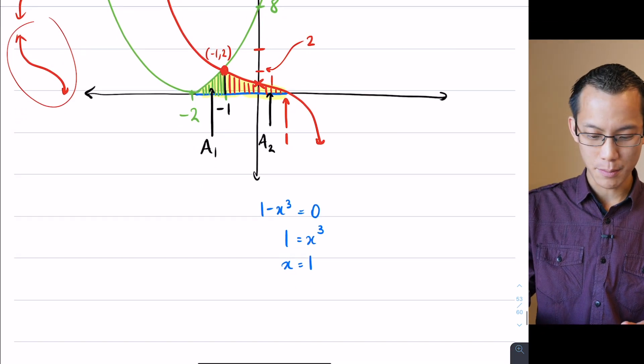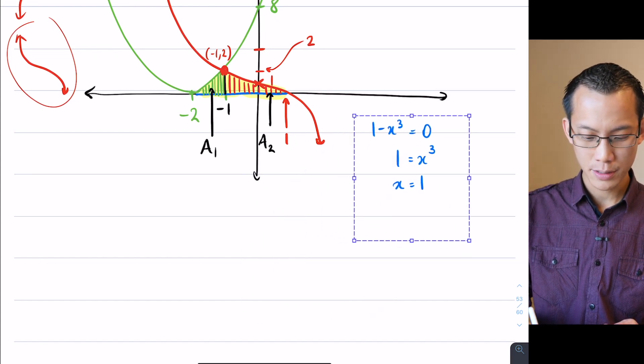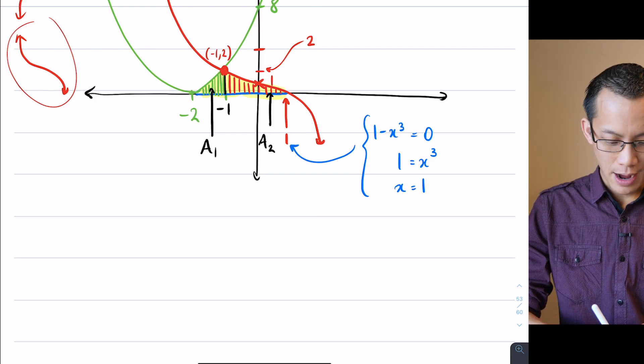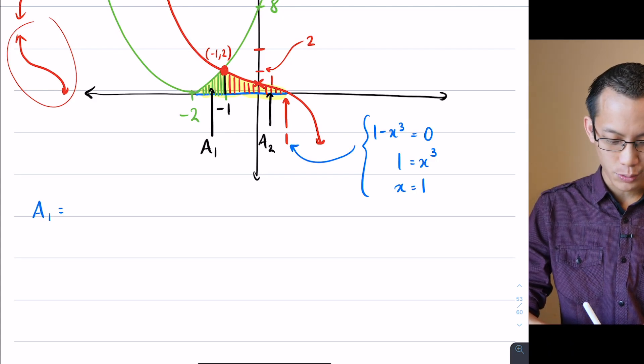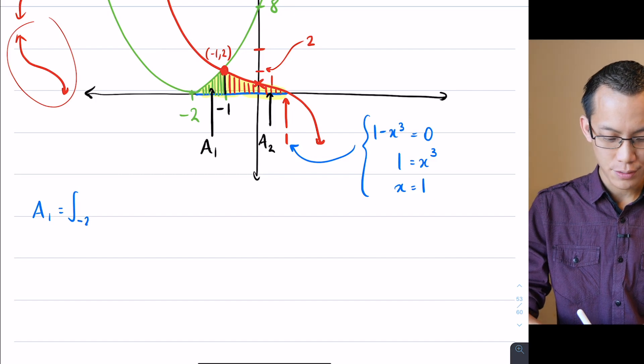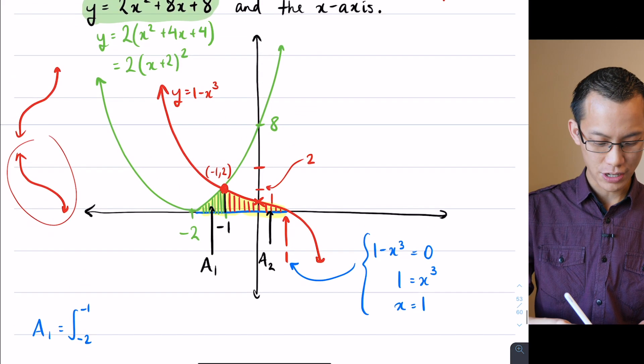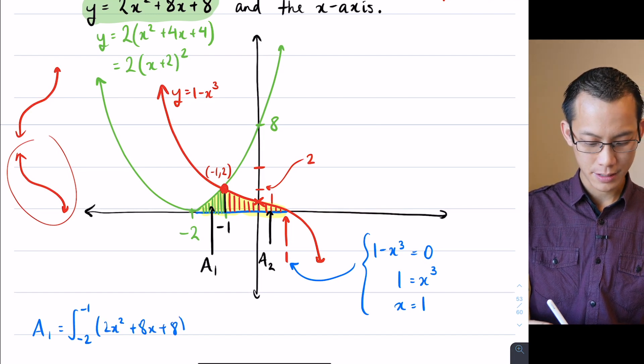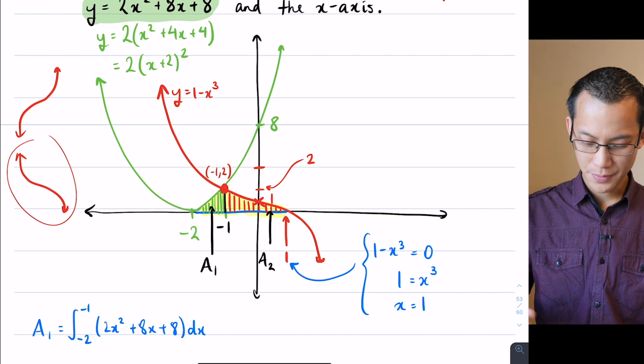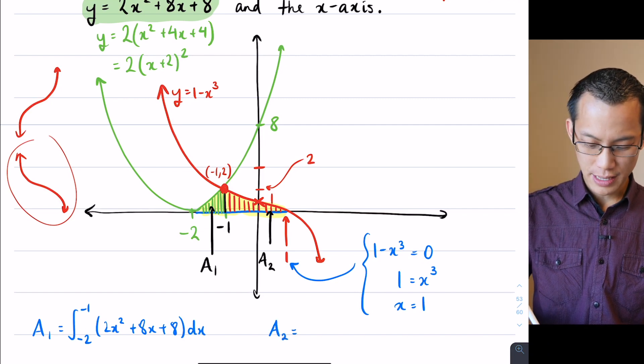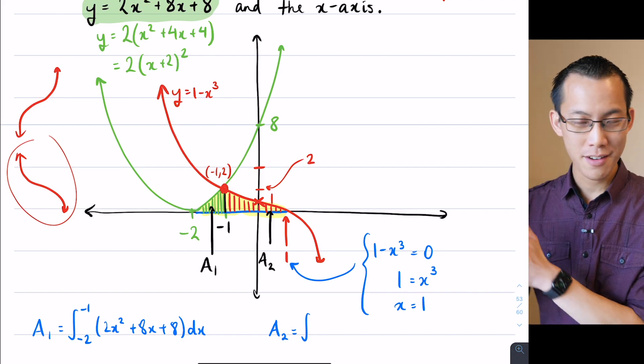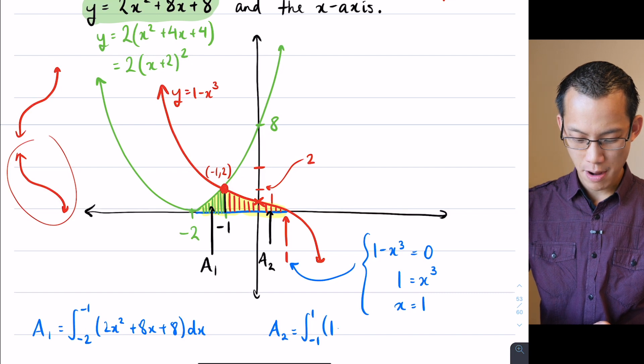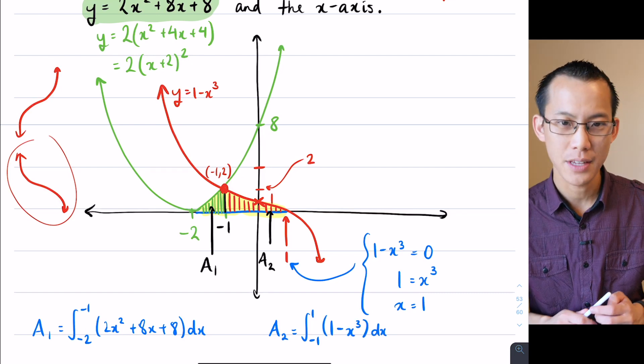So I'm ready to go. I have sketched that, I have identified the integrals, now all that's left is to actually write them. So a1 is going to be equal to the integral from negative 2 to negative 1 underneath the parabola which I think we said was 2x² + 8x + 8 with respect to x. And then I'm going to get a2 which is the integral takes over from negative 1 and carries all the way through to positive 1, so negative 1 to 1 of 1 minus x³ dx.